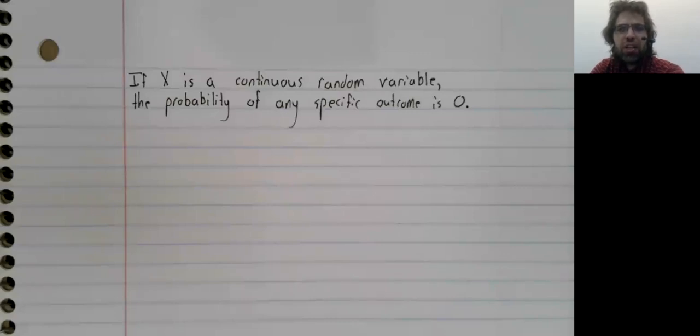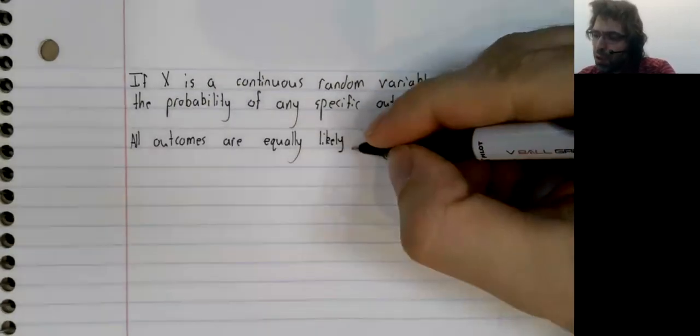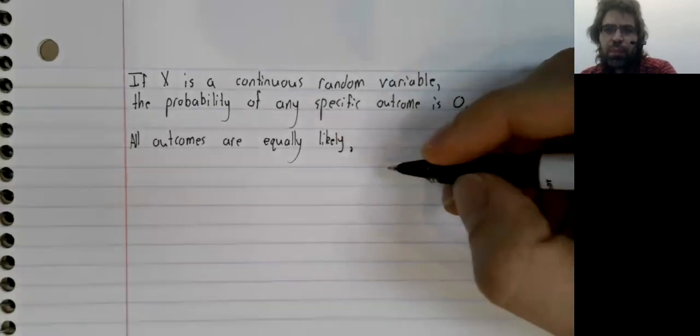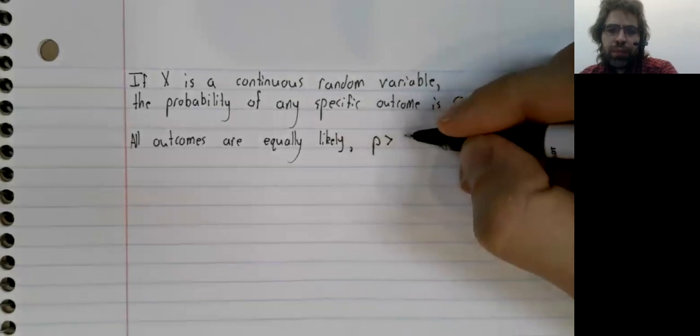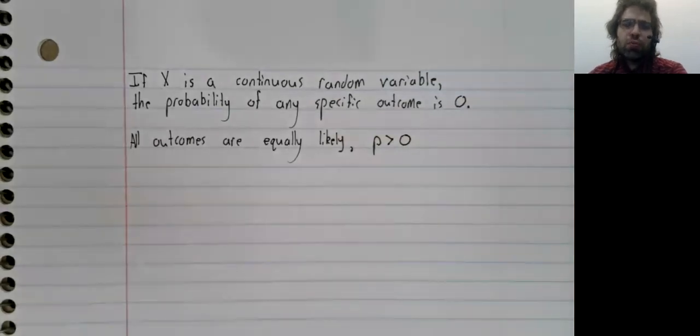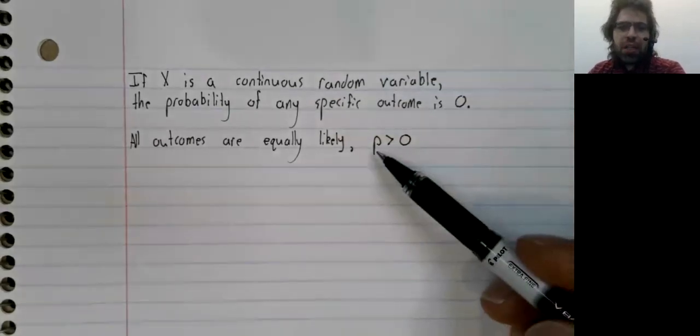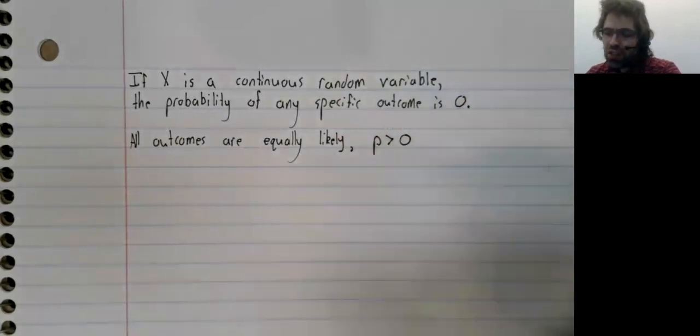but let's think it through. Suppose we want every possible outcome to be equally likely, and suppose that the probability of an outcome is anything other than zero. Well, probabilities can't be negative, so if this is not zero, it's positive.